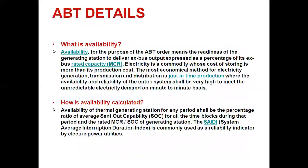Availability, for the purpose of the ABT order, means the readiness of the generating station to deliver ex-bus output expressed as a percentage of its ex-bus rated capacity — that is the MCR. Electricity is a commodity whose cost of storing is more than its cost of production. The most economic method for electricity generation, transmission, and distribution is just-in-time production, but availability and reliability of the entire system must be very high to meet unpredictable electricity demand on a minute-to-minute basis.